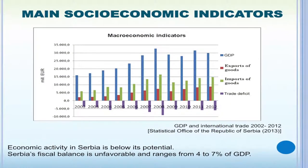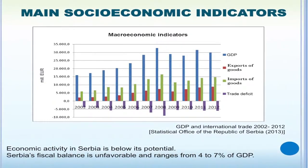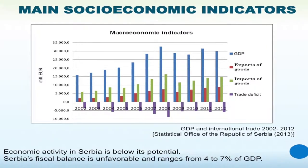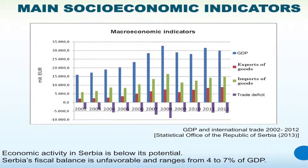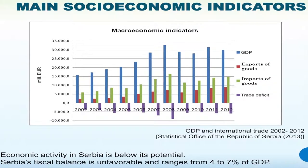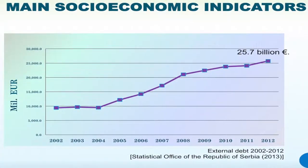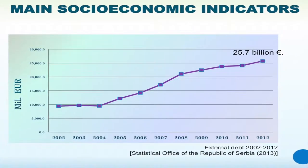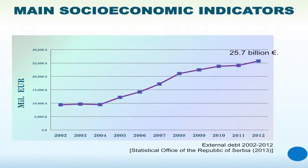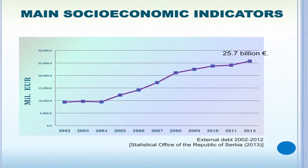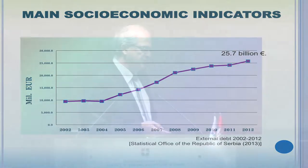Moving to socio-economic indicators, Dr. Szoic's presentation yesterday showed macroeconomic indicators for Serbia that are not too favorable. Our GDP is about 30 billion euros, but the fiscal balance deficit is about 4–7% of GDP each year, leading to an increase in external debt, which is now about 25.7 billion euros — somewhere near the border of 80% of national income. This means we must think carefully about the possibility of further loans and how to make investments without excessive borrowing.